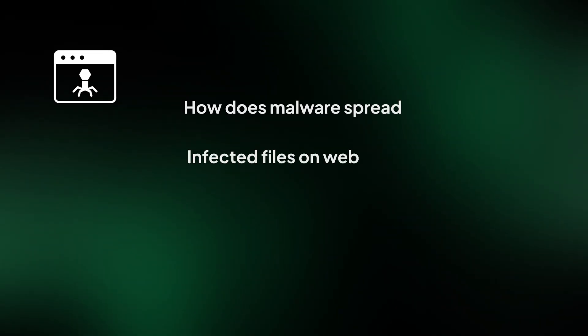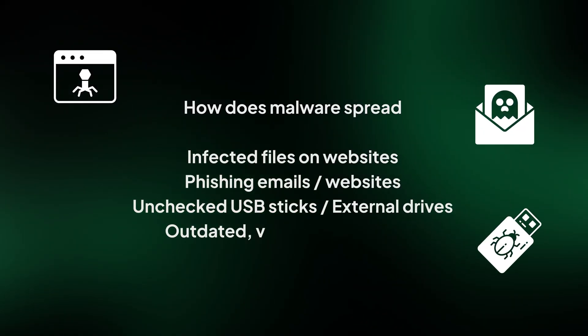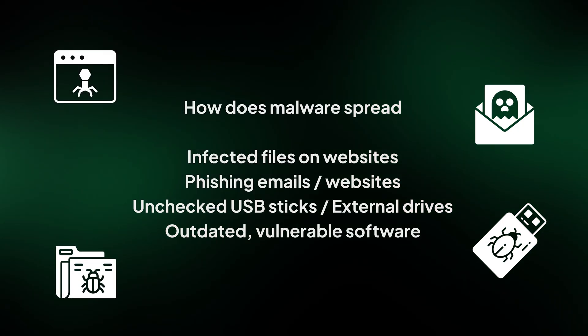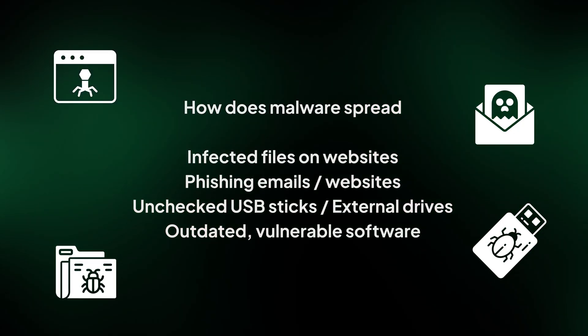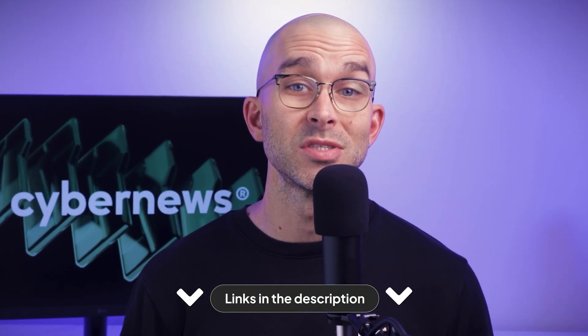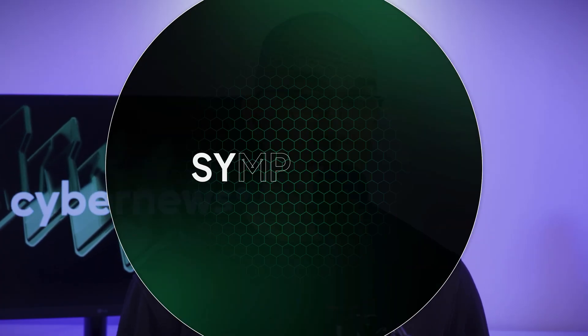There are many different ways viruses can end up on your device. You could have downloaded an infected file through a random link online, received a phishing email with an infected file, or even received malware through a USB stick or third-party storage device. Malware is often unnoticeable enough to slip through the cracks if you're not using specialized software to detect it. Antiviruses are just such specialized software, and I've prepared the best antivirus deals in the description below.